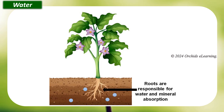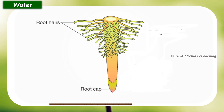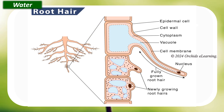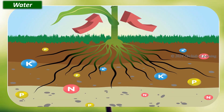The root system of plants enables them to obtain water from the soil. The root system consists of a main or primary root, rootlets or secondary roots, and root hair. Root hair increase the surface area of roots and are found in great numbers near the tips of roots. Water and soluble nutrients travel through the root system and reach the leaves.